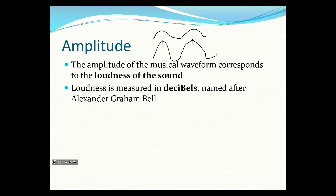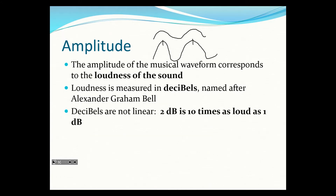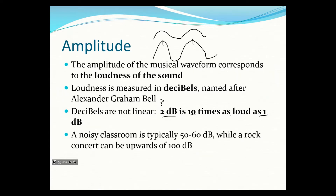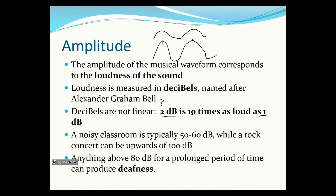The decibel scale is not linear — it's logarithmic, similar to pH in chemistry. Two decibels is ten times louder than one, and three decibels is a hundred times louder than one. A noisy classroom is around 50–60 decibels while a rock concert can be upward of 100 decibels. Listening to anything over 80 decibels for a long period of time can damage the tiny hair cells in your ears and cause hearing loss.